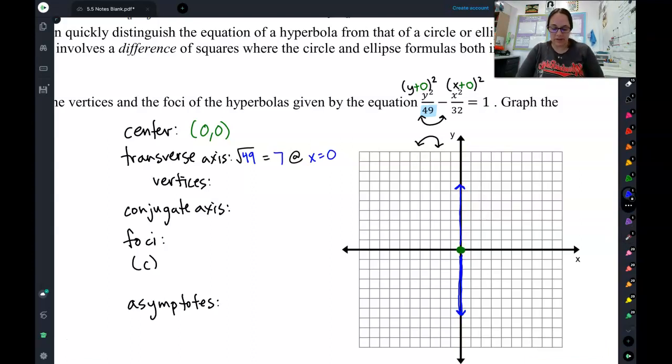And, at the end of our transverse axis, comes our vertices. So we can put those vertices at the end of our transverse axis, and list those as 0, 7, and 0, negative 7. Sweet.